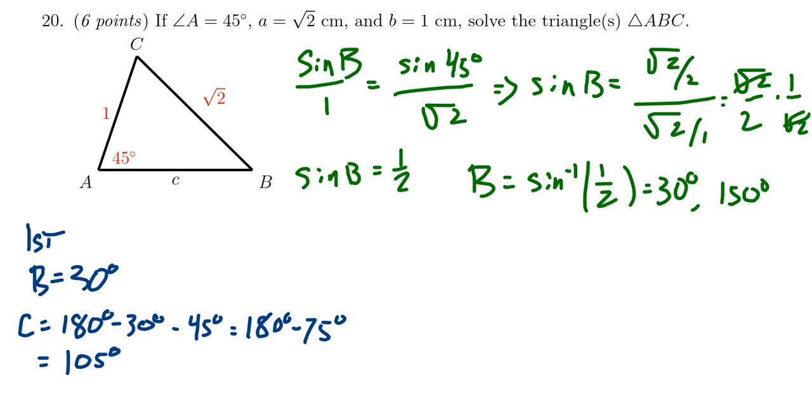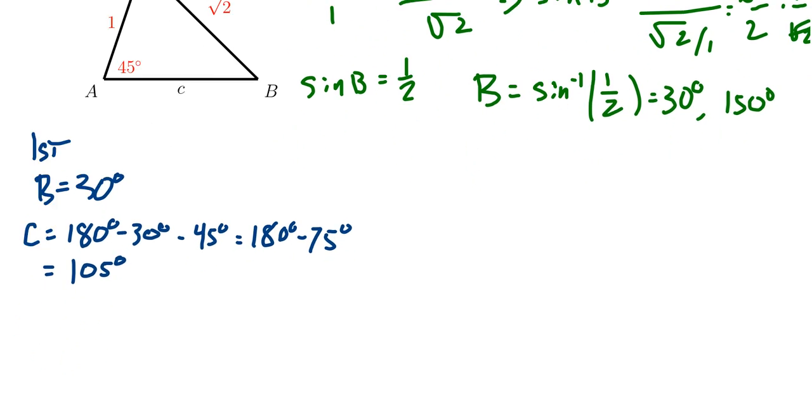Then we have to find the third side of the triangle. We could do that using the law of sines or law of cosines, whichever you prefer. I'm just going to use the law of sines. So we get that c over sin 105° equals √2 over sin 45°. That tells us that c equals √2 times sin 105° over √2/2, which is the same as taking 2 over √2. Those cancel out.